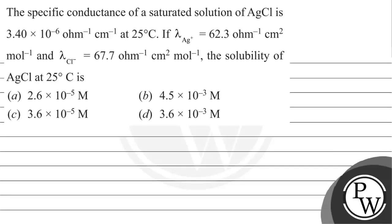Hello, let's read this question. The question says the specific conductance of saturated solution of AgCl is this at 25 degrees Celsius. If the equivalent conductance of Ag plus is this and of Cl is this respectively, we need to find out the solubility of AgCl at 25 degrees Celsius. These are the four options that are given.